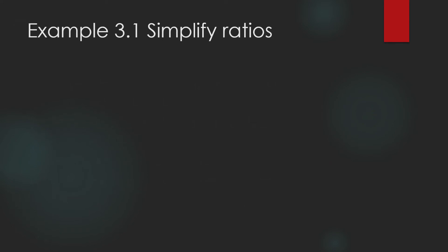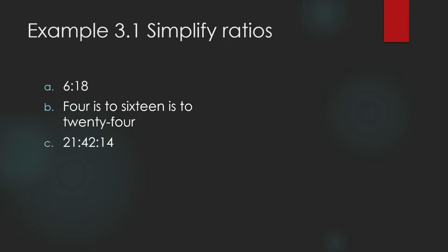Example 3.1 — Simplify ratios. First, 6 is to 18. That is not the simplified form because the terms have a common factor. 6 is a common factor: 6 divided by 6 is 1, and 18 divided by 6 is 3. So in simplified form, the ratio is 1 is to 3.